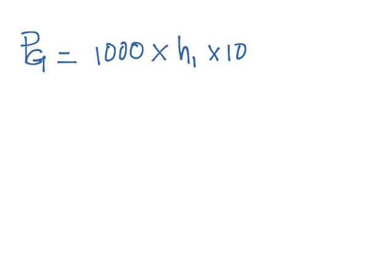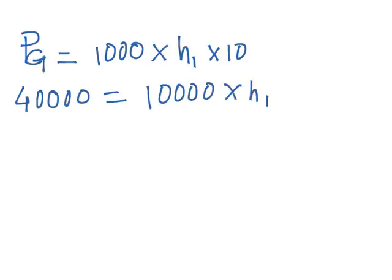We can put the values in both formulas. Pressure at ground floor is rho 1000 into h1 into g. So P_G value is given as 40,000. So 40,000 equals 1000 into 10, that is 10,000 into h1. We can find it. We cancel all the zeros. So h1 is equal to 4 meters. That is equation number 1.